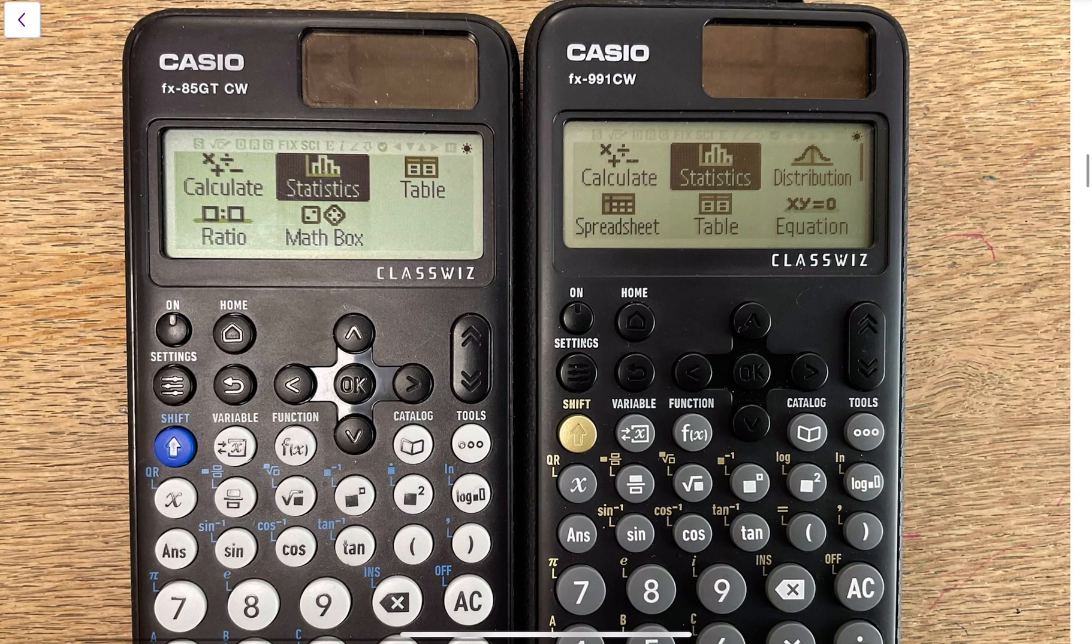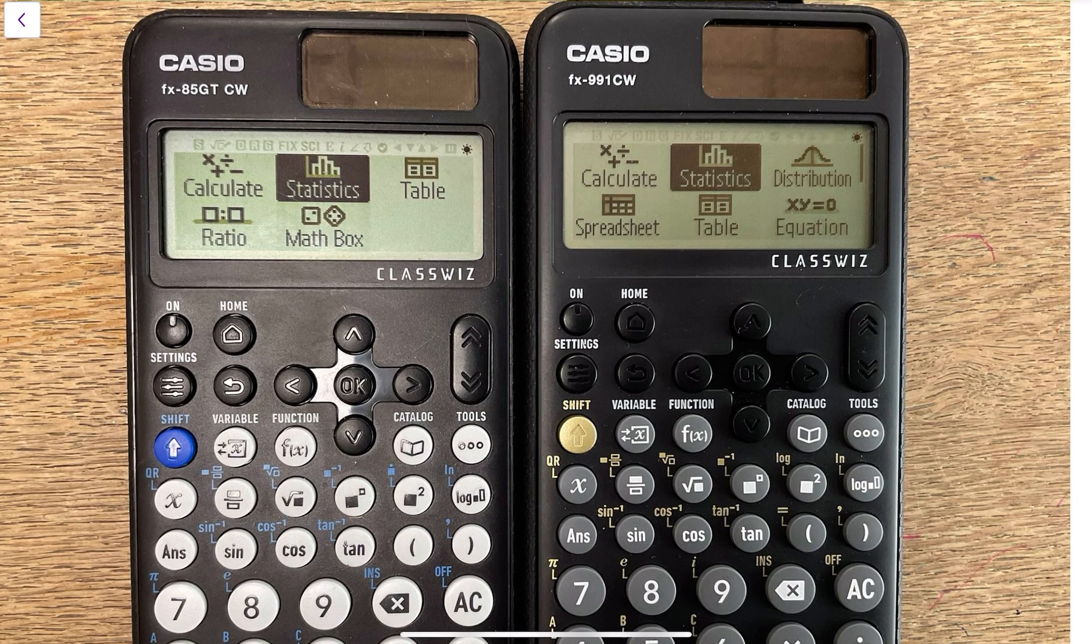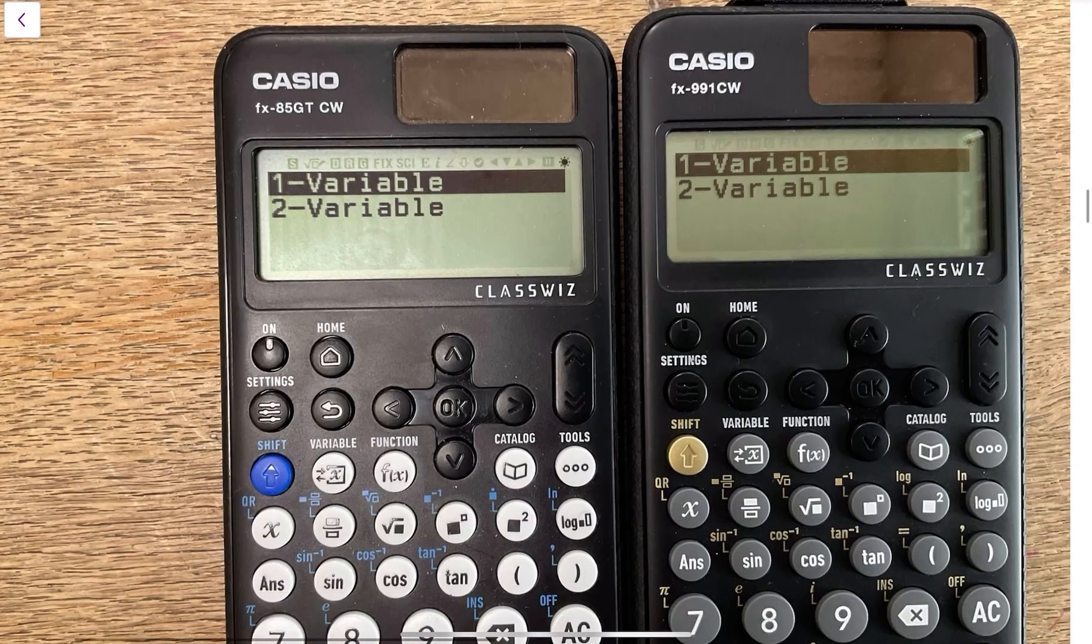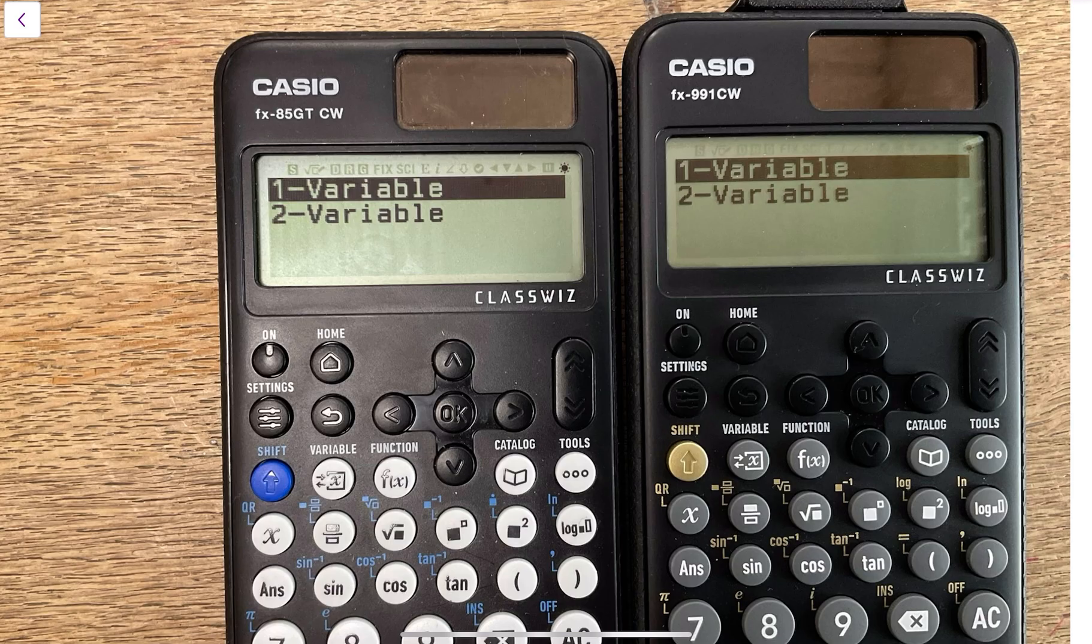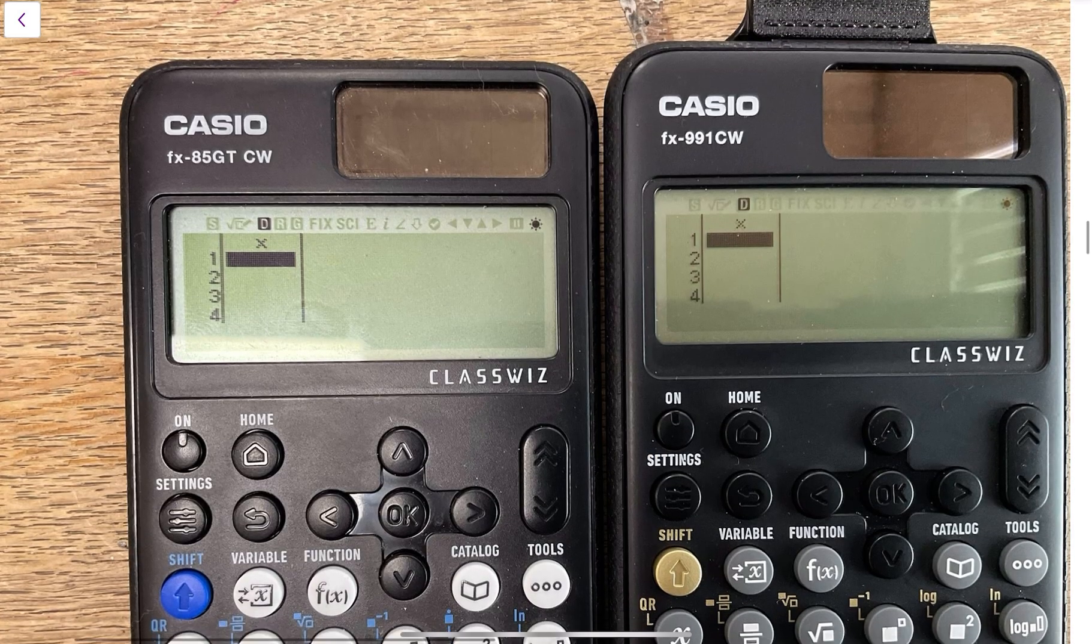What you do is you hit home first of all. I'm just checking this here. You're hitting home and then one of the options is statistics, so hit statistics, and then what comes up is one-variable or two-variables. So you only want one variable.